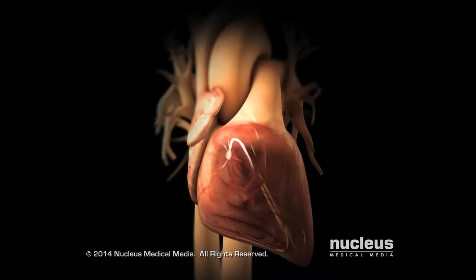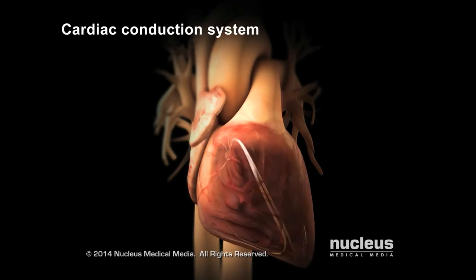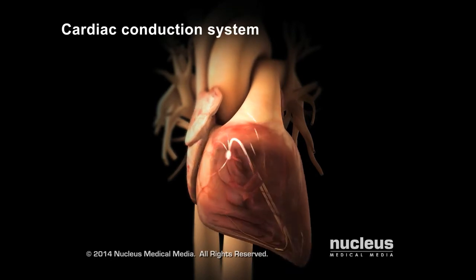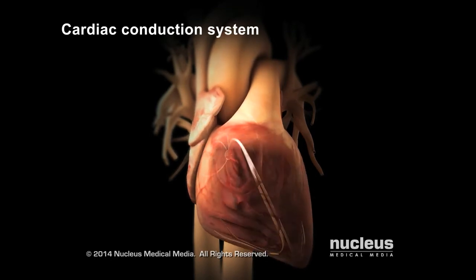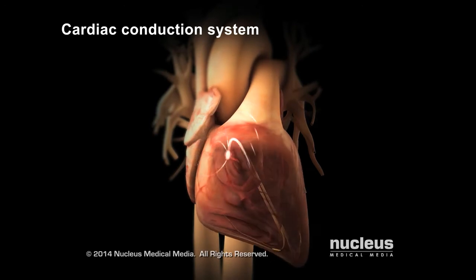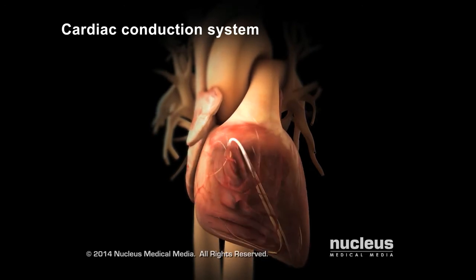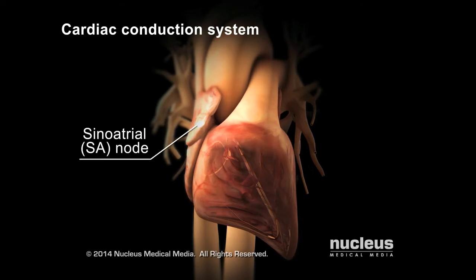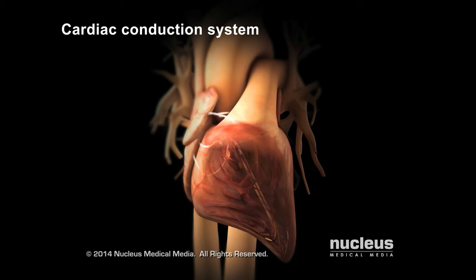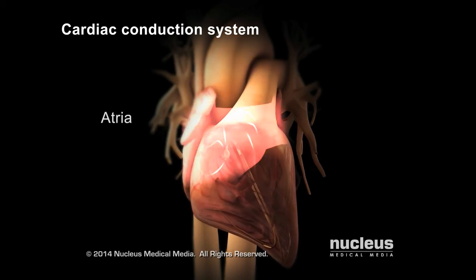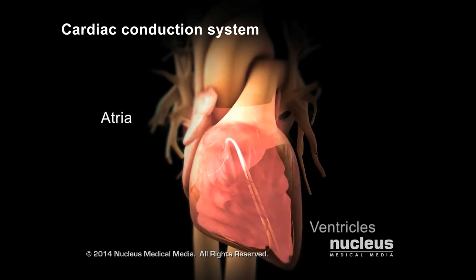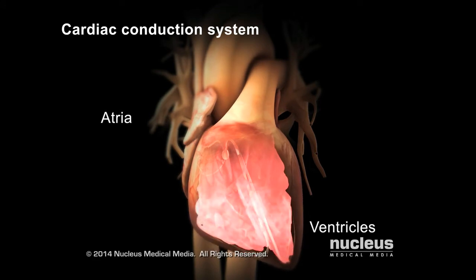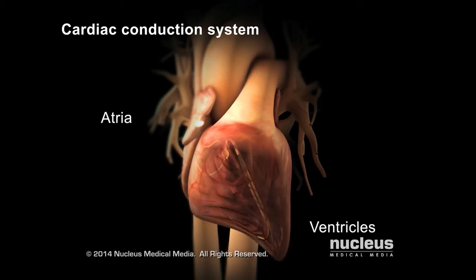A group of cells in the heart, called the cardiac conduction system, uses electrical impulses to control the speed and rhythm of each heartbeat. Each heartbeat starts in the right atrium in the sinoatrial, or SA, node, then spreads through the walls of the heart chambers, called the atria and ventricles, causing them to contract. This process repeats with each heartbeat.